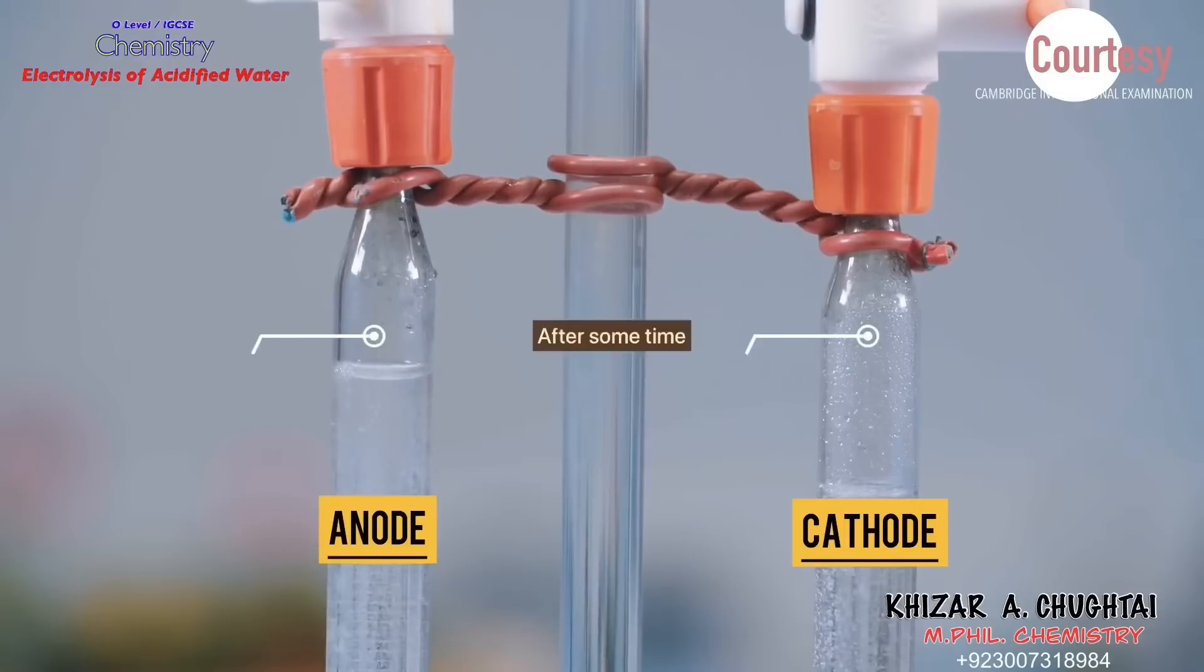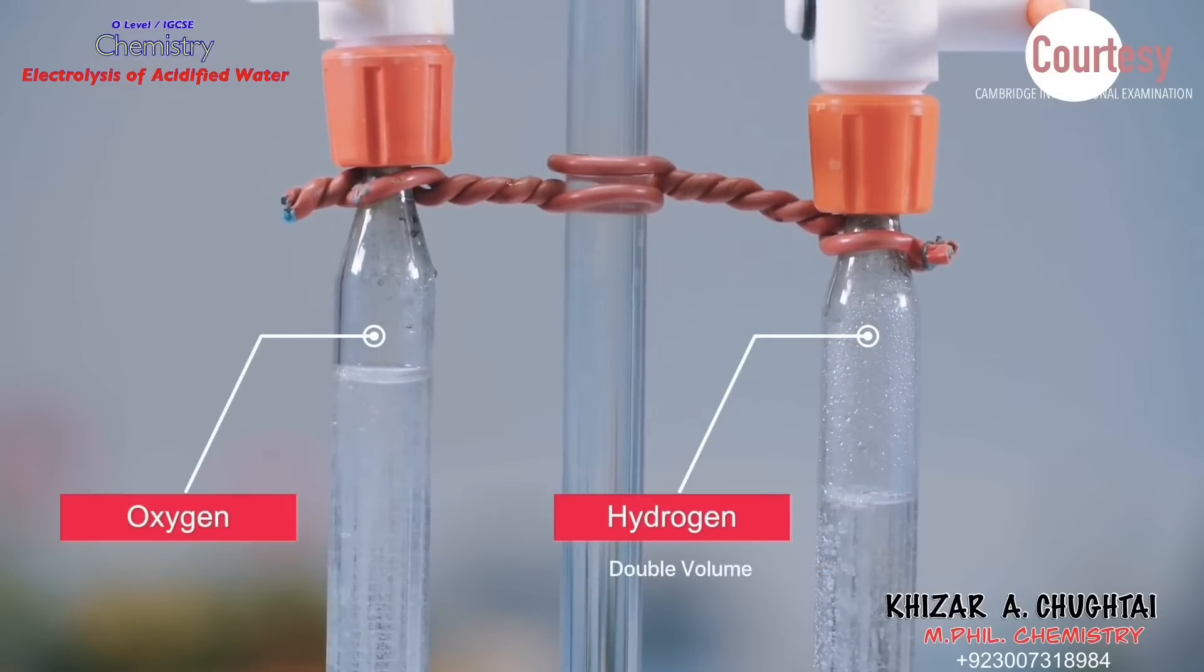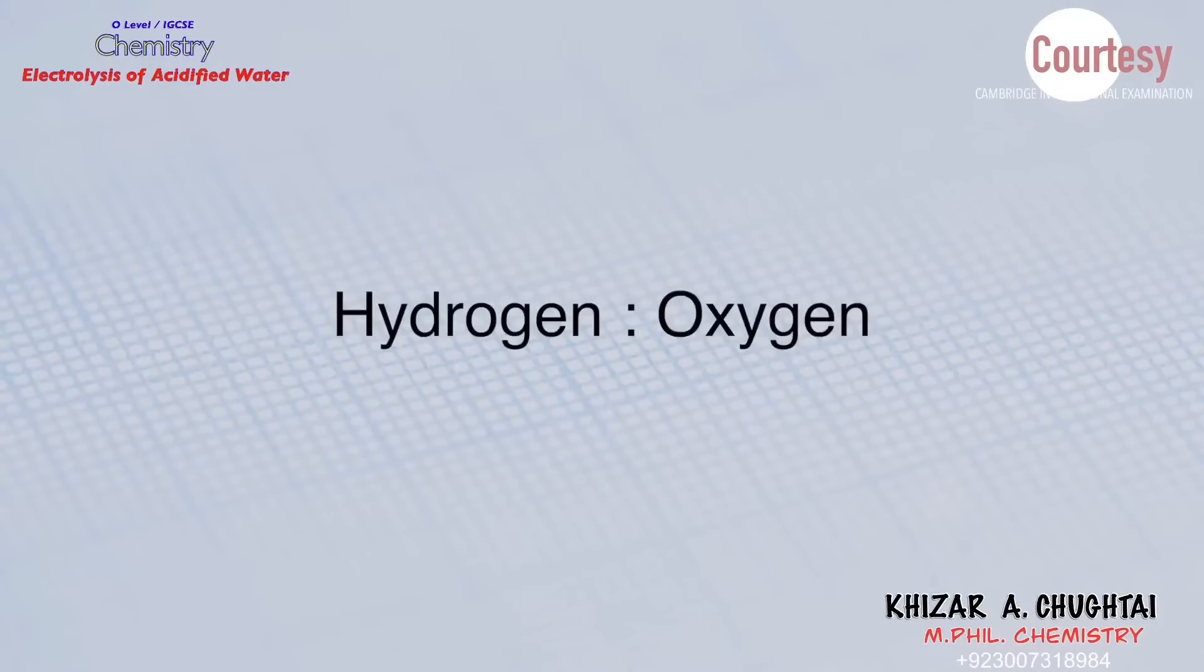After a few minutes, double volume of hydrogen is collected than that of oxygen. So stoichiometric ratio of hydrogen gas to oxygen gas is 2 to 1. This is the similar ratio of hydrogen and oxygen elements in water.